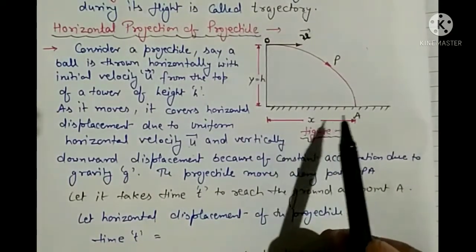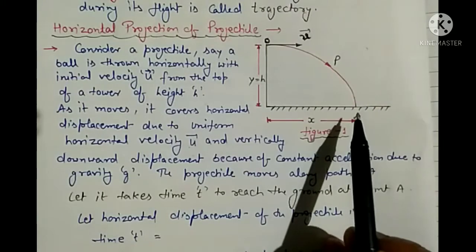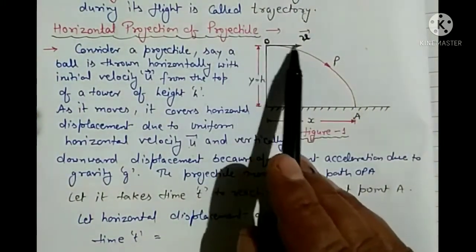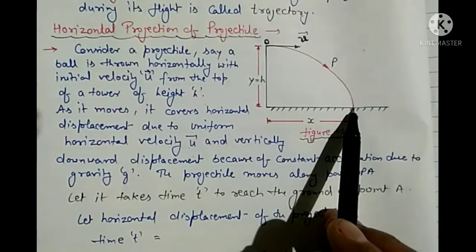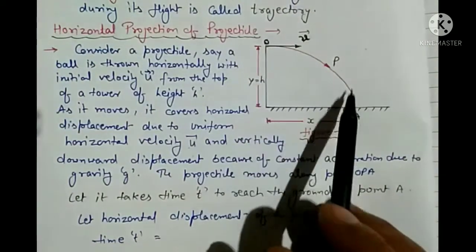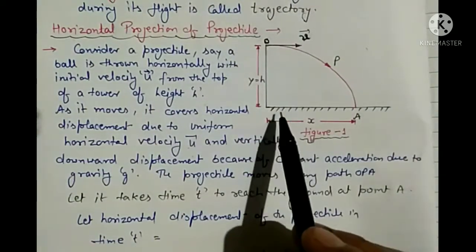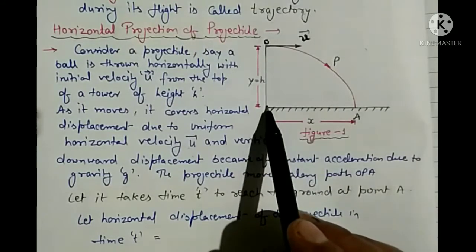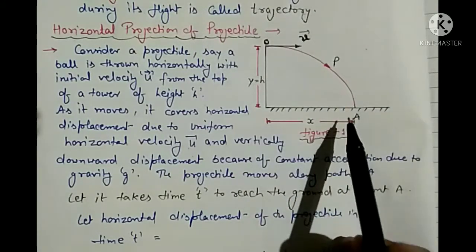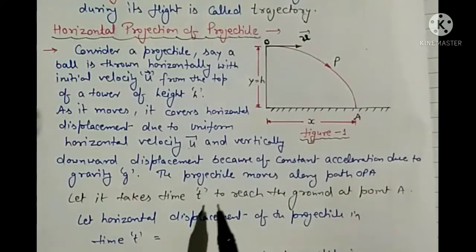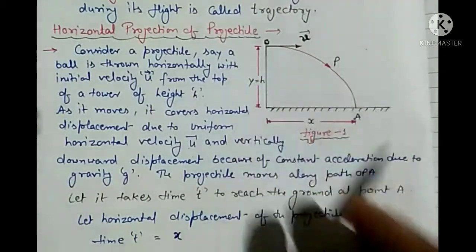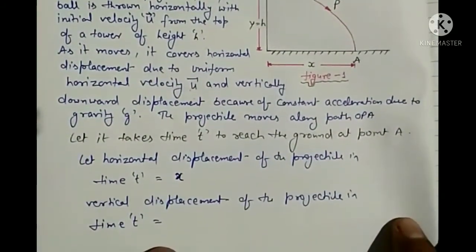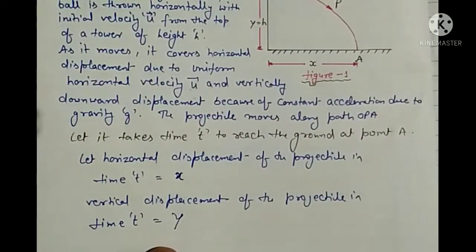Let T be the time taken to reach the ground at point A. We throw the projectile and it follows this path to hit the ground. The horizontal displacement in time t is x, and the vertical displacement in time t is y.